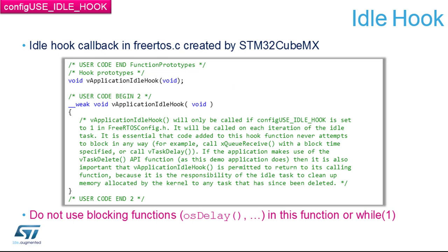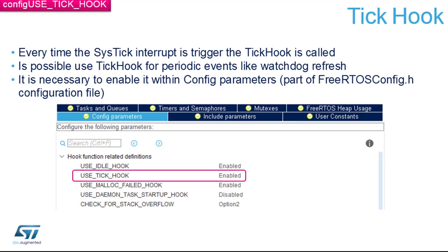When you enable it, FreeRTOS expands the code with the function prototype and a weak body. There is a long comment about when it's called and how it should be used. Don't use any blocking functions in the idle hook — use it for entering low power modes. You can also mark the entry to the idle function and by comparing it with the next task switch entry, calculate how much time is spent idle versus active, making the idle hook useful for monitoring CPU load.